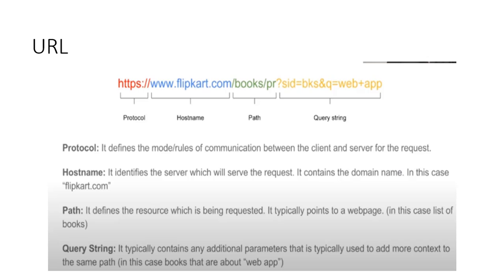The hostname contains the domain name, which can be any name like flipkart.com, daraz.com, or olx.pk. The path defines the resource being requested — for example, a list of books on flipkart.com. It typically points to a web page. The query string contains additional parameters used to add more context to the path — for example, specifying that we want books about web applications.